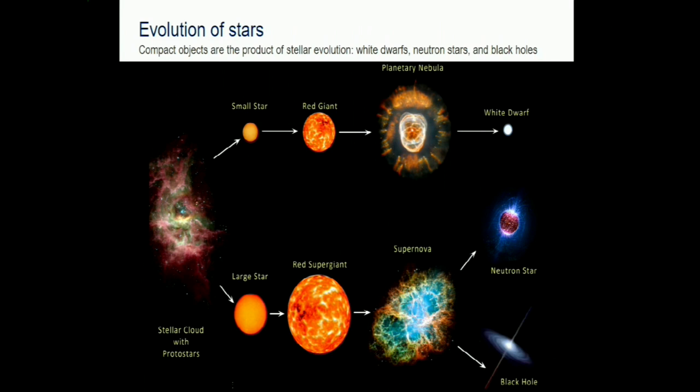Looking at what compact objects are available: light stars will end up as white dwarfs. Stars in the range up to about 10 solar masses will go supernova and can leave a neutron star behind. Stars heavier than about 20 solar masses can create black holes - the most compact objects we have.